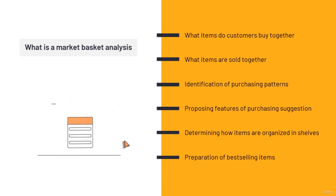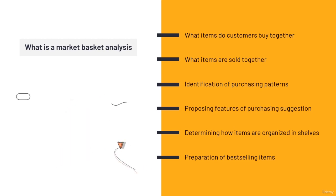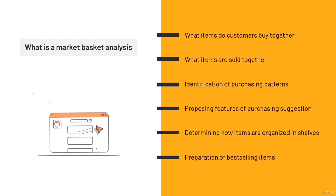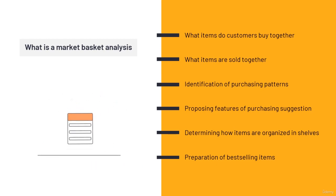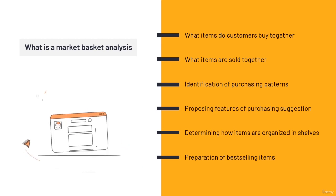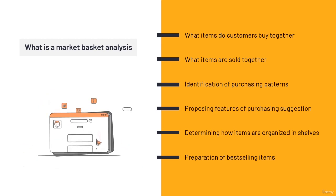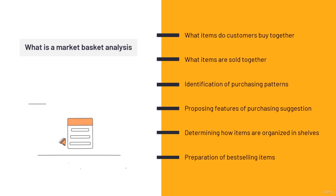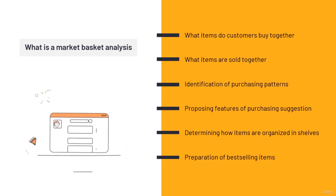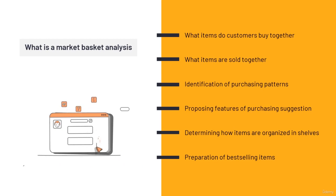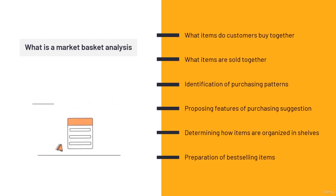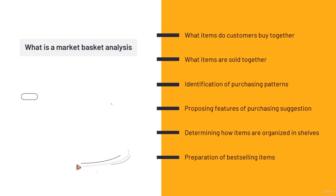After we gave our client the outputs, they decided to stop sending that specific item to that city, or send it in small amounts. There would be too much in depot because the item was not very popular there. These things really make a difference. After we ran the algorithm, their sales went up by 2% without changing the production line. 2% more income or less expenditure is a lot in a factory that makes billions.